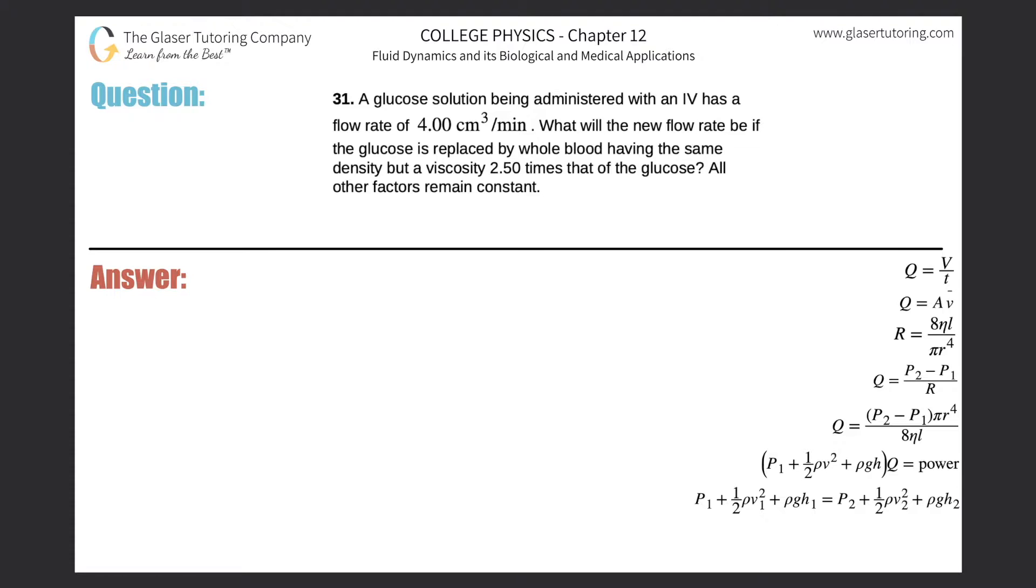Number 31. A glucose solution being administered with an IV has a flow rate of 4 cubic centimeters per minute. What will the new flow rate be if the glucose is replaced by whole blood having the same density but a viscosity 2.5 times that of glucose? All other factors remain constant.